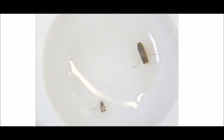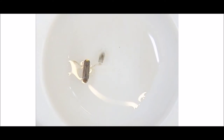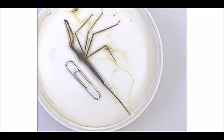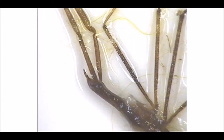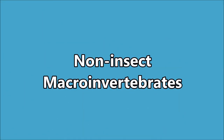Water boatmen are true bugs. They row with their legs, kind of like the whirligig beetle, to move in the water. They actually suck plant juices from algae and other water plants, which is unusual — most of the beetles and bugs are carnivorous. This is a water scorpion, one of our largest macroinvertebrates. They grab prey with their front legs, pierce it with their piercing mouth part, and eat it. On the tip of their abdomen they have what looks like a stinger, but it's actually an oxygen tube that they take up to the surface of the water to get oxygen.